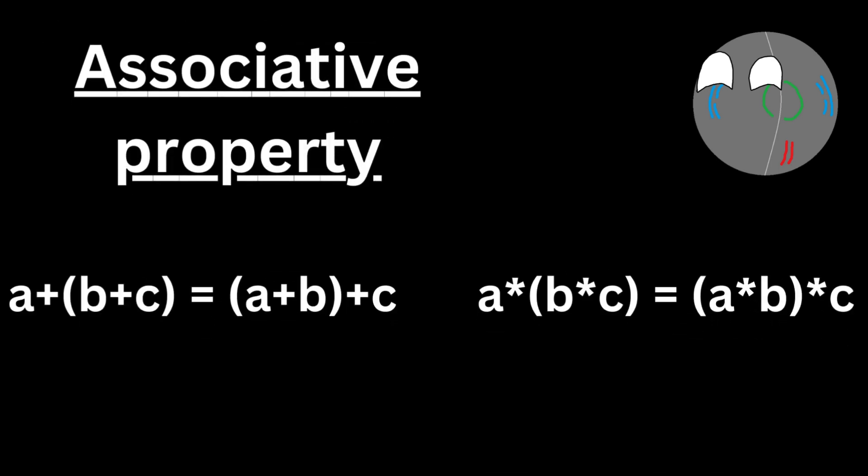The associative property states that a plus (b plus c) is equal to (a plus b) plus c. This is shown on screen right now — you can pause if needed; it's a bit to take in.